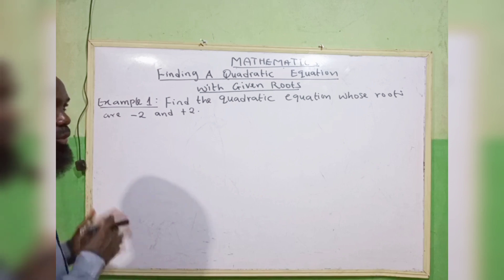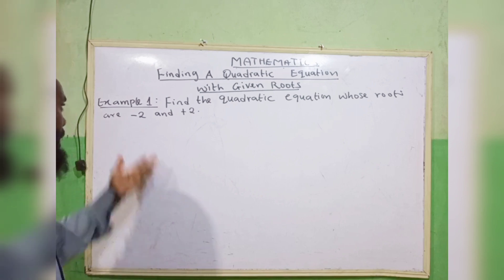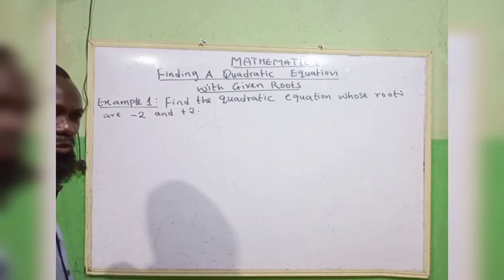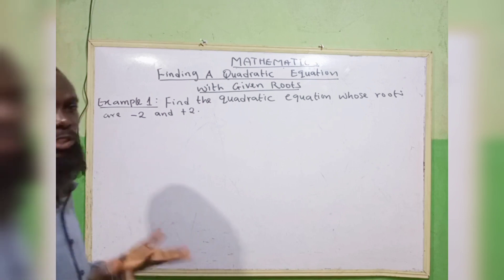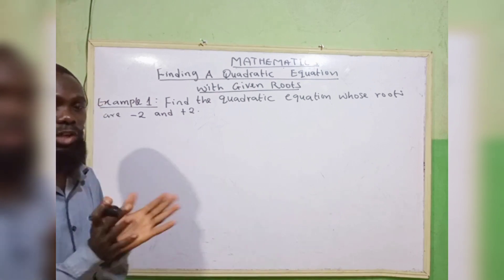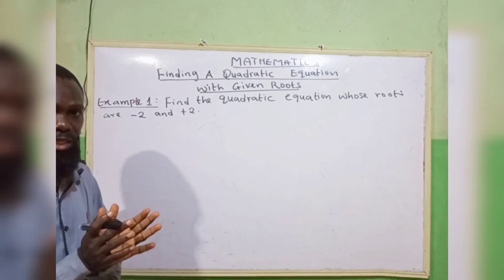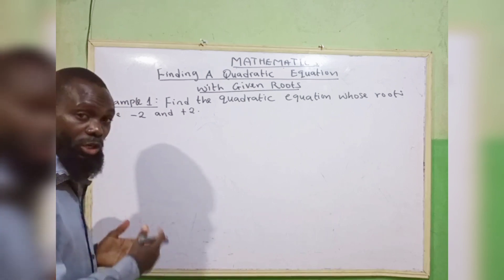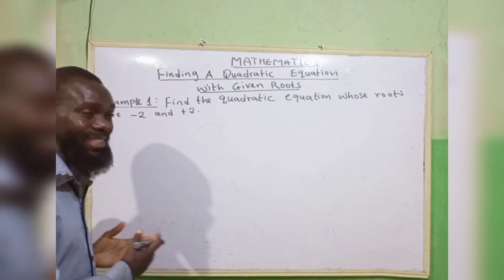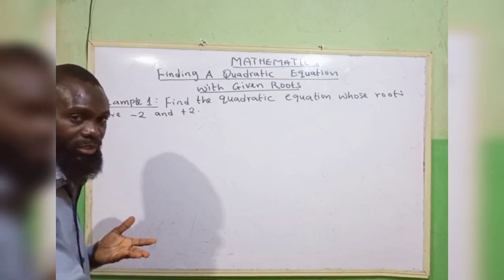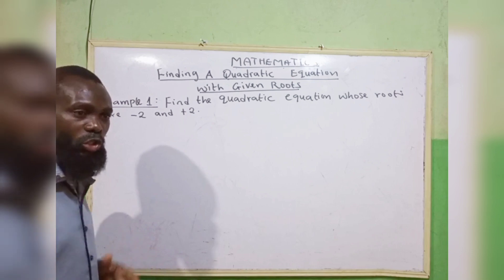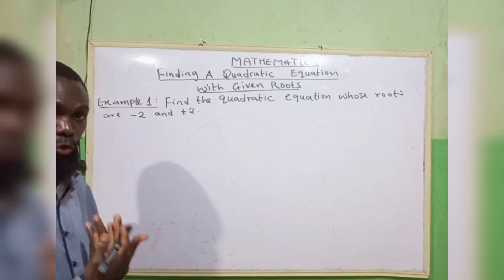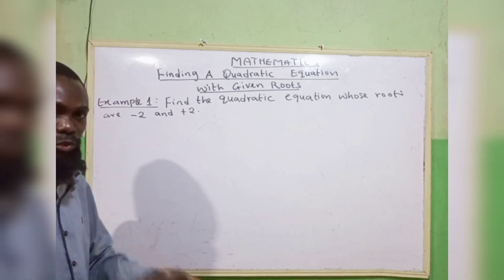To find this quadratic equation, you are given the roots. Don't forget, in some quadratic equations, after you finish solving, you are going to get your value of the unknown — maybe x equals to something. So those values you got, they are what we call roots of that equation.